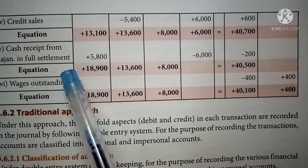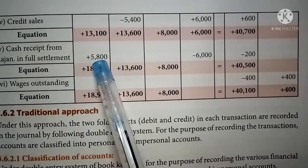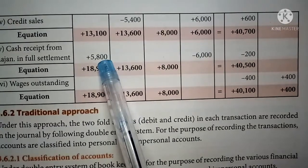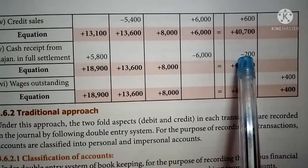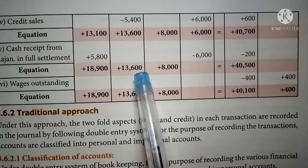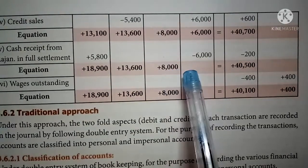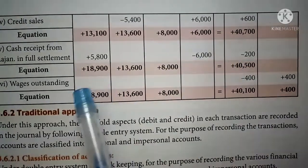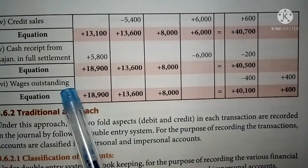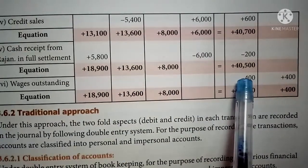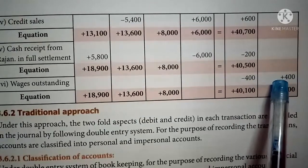Transaction 5 — cash received from Rajan: add 5,800 to cash column, subtract 6,000 from debtor column. The difference of 200 is discount allowed, subtracted from capital. Adjusted equation: cash 18,900, stock 13,600, machinery 8,000, debtor nil, capital 40,500, liability nil. For wages outstanding, since we are not paying wages now (still to be paid), subtract 400 from capital and add 400 to the liability column.